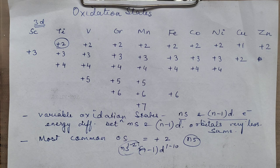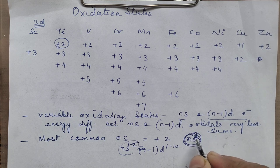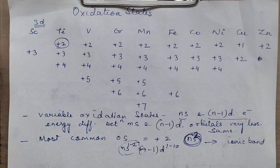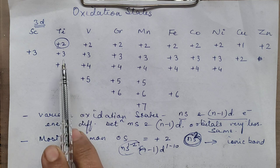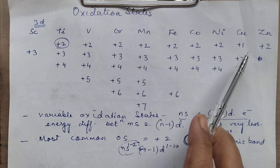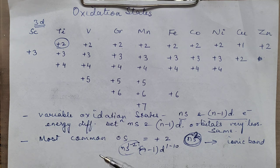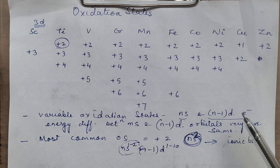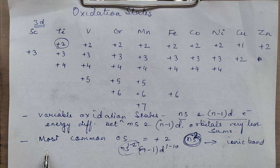The 4s electrons will be the first ones to be removed because that is the valence shell. Whenever the 2 electrons of Ns are participating, it results in the formation of an ionic bond, because ionic bond is formed by transfer of electrons. So in case these elements go for bond formation by the participation of Ns only, it is always ionic bond — meaning if the lower oxidation state is exhibited, it will be an ionic bond.